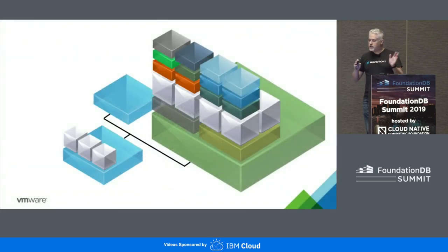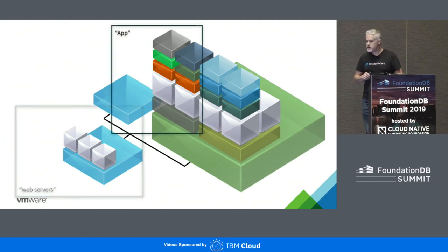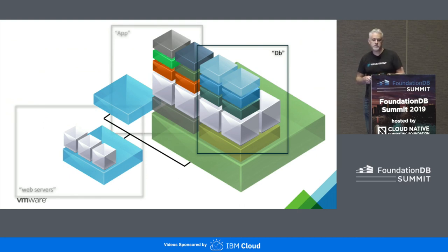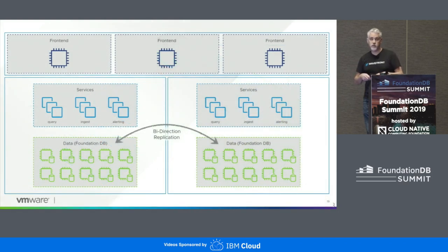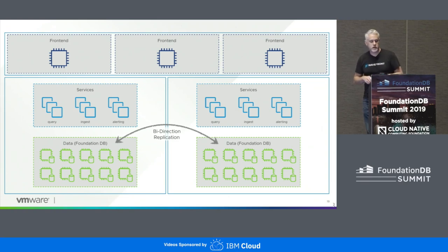At a super high level, this is a very simplified view of a Wavefront cluster. There are three tiers: a web server tier, an application tier, and a database tier. Importantly, Wavefront runs active-active, so what you see is duplicated. At a 30,000-foot view, we have the front-end web servers, then duplicate services either in two different AZs or two different regions, and at the bottom, of course, FDB.